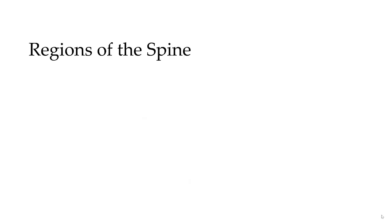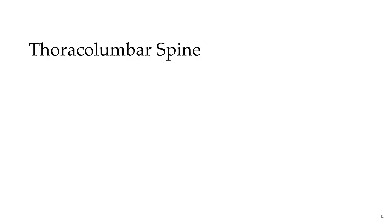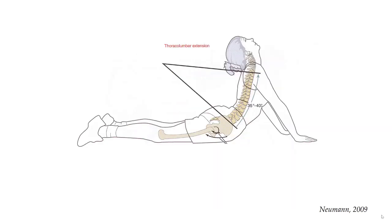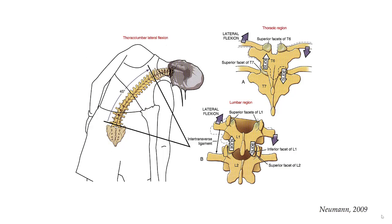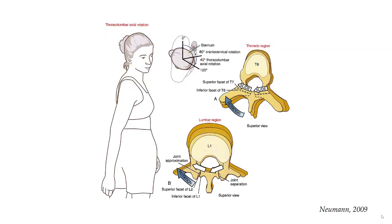So that's what happens at the functional spinal unit level. As I mentioned earlier, spinal motion is really the sum of the functional spinal units in that region. For this class we are going to break the spine up into two regions. The first region is composed of the thoracic and lumbar vertebrae. Motions in the thoracolumbar region include flexion, extension, lateral bending or lateral flexion, and rotation.